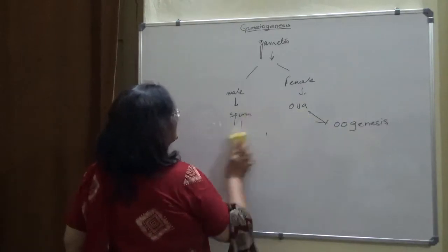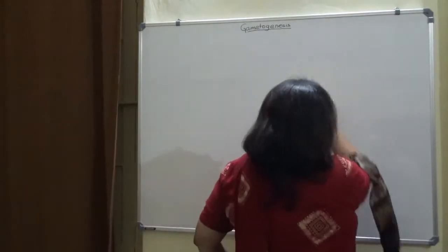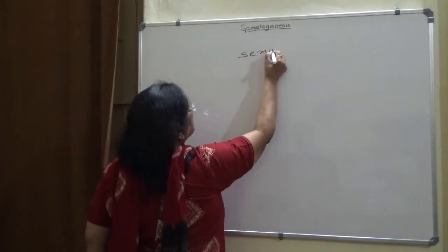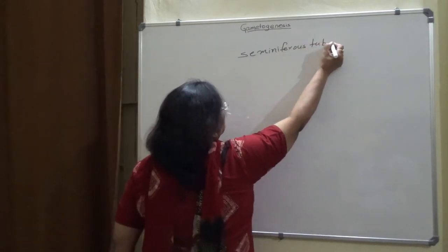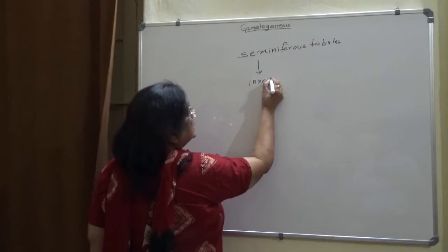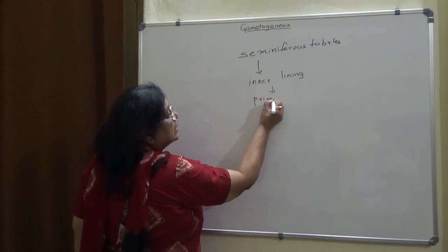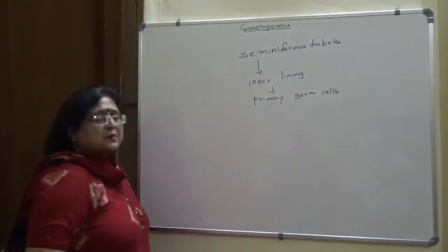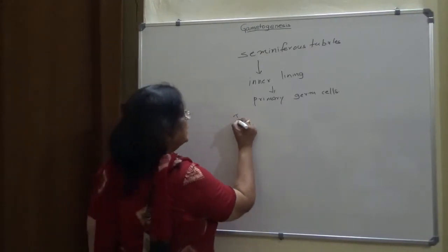Spermatogenesis takes place in the male gonad, that is the testis. The testis is made up of a large number of seminiferous tubules. The inner lining of the seminiferous tubules acts as the primary germ cells, from which the sperms will be produced in two phases.